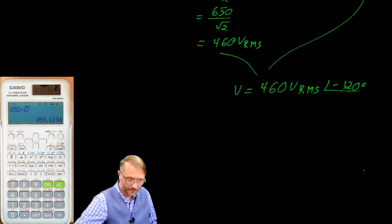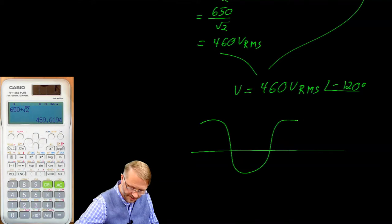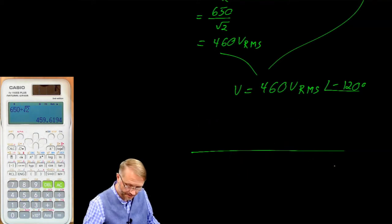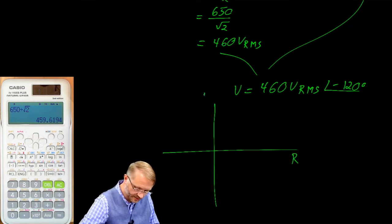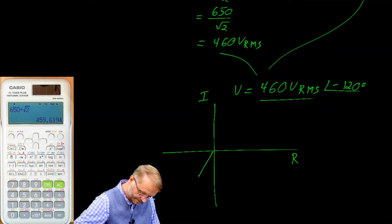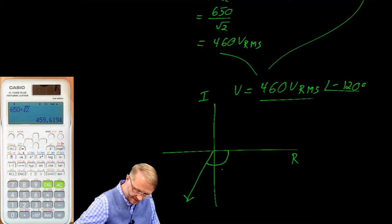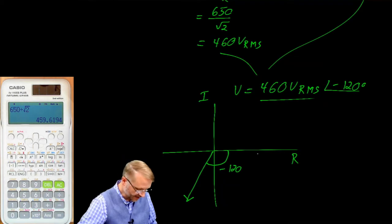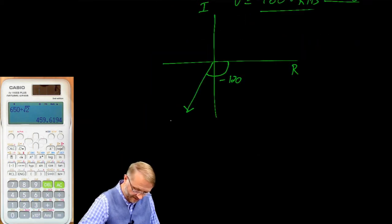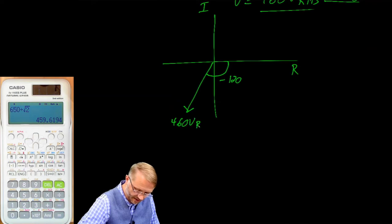We could express that in the time domain drawing a sinusoid as a function of time. But for today we are going to use the phasors. So we have the real axis, we have the imaginary axis, and this particular vector, this phasor is located right there. It has an angle of negative 120 degrees with respect to the real axis, and it has a length of 460 volts RMS.